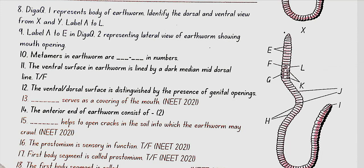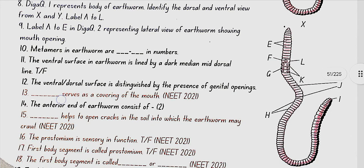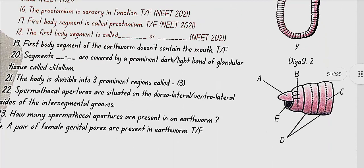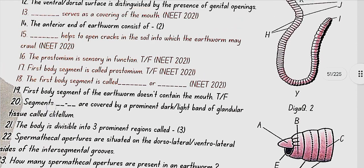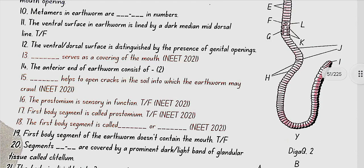Label A to E in diagram 2 representing lateral view of earthworm showing mouth opening. A is prostomium, B is peristomium, C is ring of setae, D is metameres, E is mouth opening. Metameres in earthworm are 100 to 120 in number. The ventral surface of earthworm is lined by a dark median mid-dorsal line — no, this is false. It should be the dorsal surface.